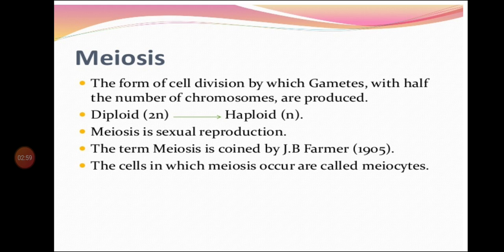By this division, the number of chromosomes is reduced to half; hence it is also called reductional division. You can see 2N getting reduced to N. Meiosis produces four haploid daughter cells from a diploid parent cell. Meiosis is of two subtypes.